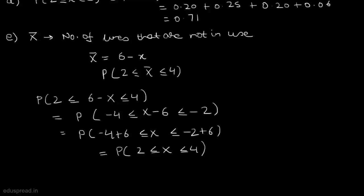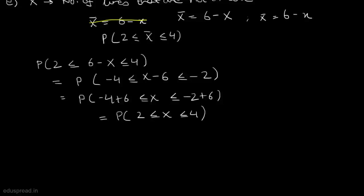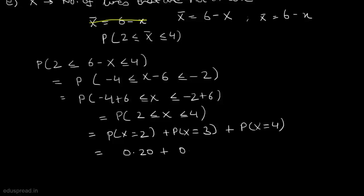A small clarification on notation: X̄ as a random variable equals 6 minus capital X, while the values x̄ equal 6 minus small x. Now, P(2 ≤ X ≤ 4) = P(X=2) + P(X=3) + P(X=4) = 0.20 + 0.25 + 0.20 = 0.65.